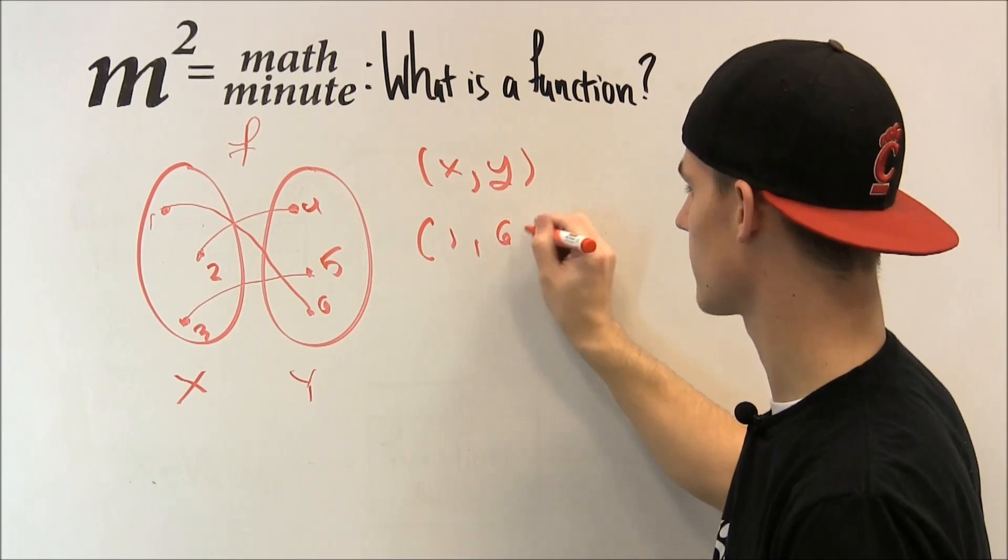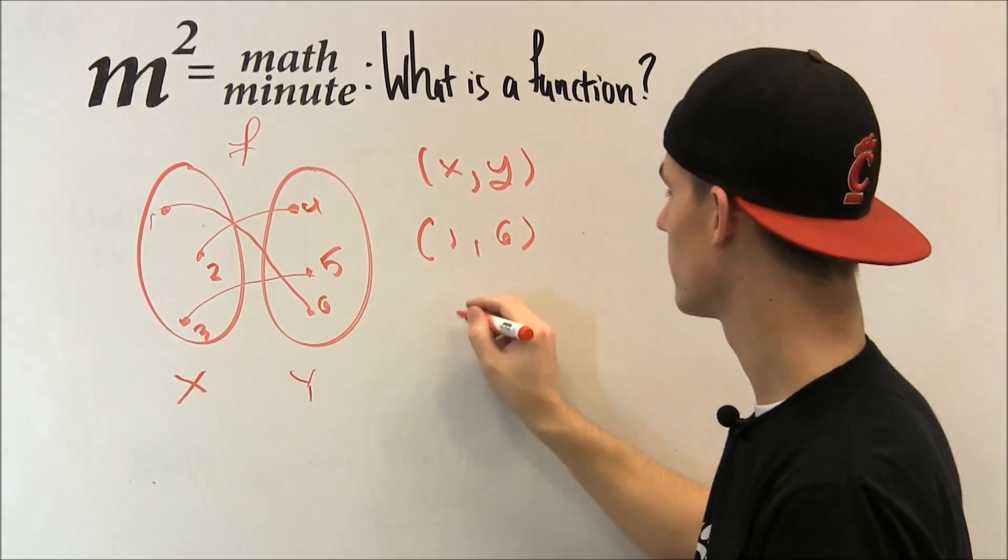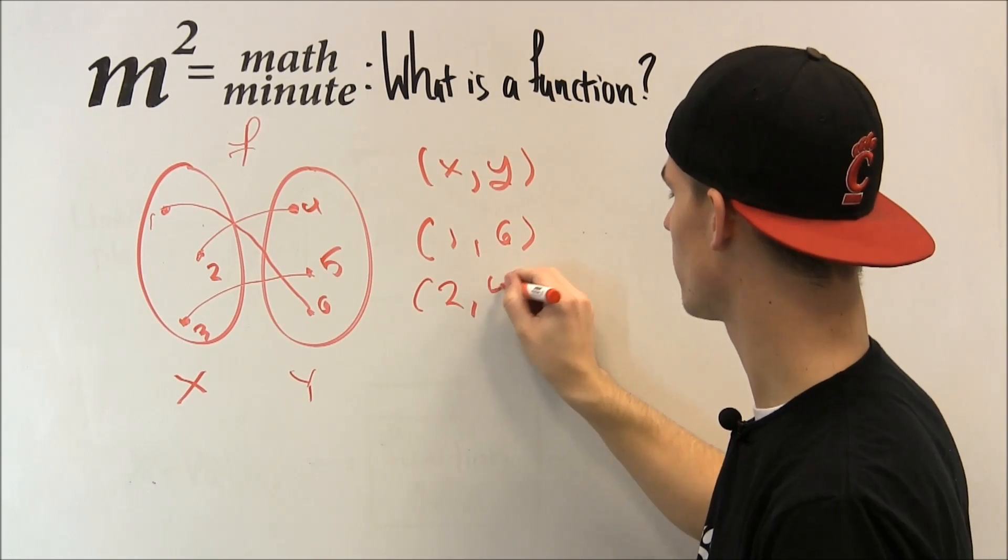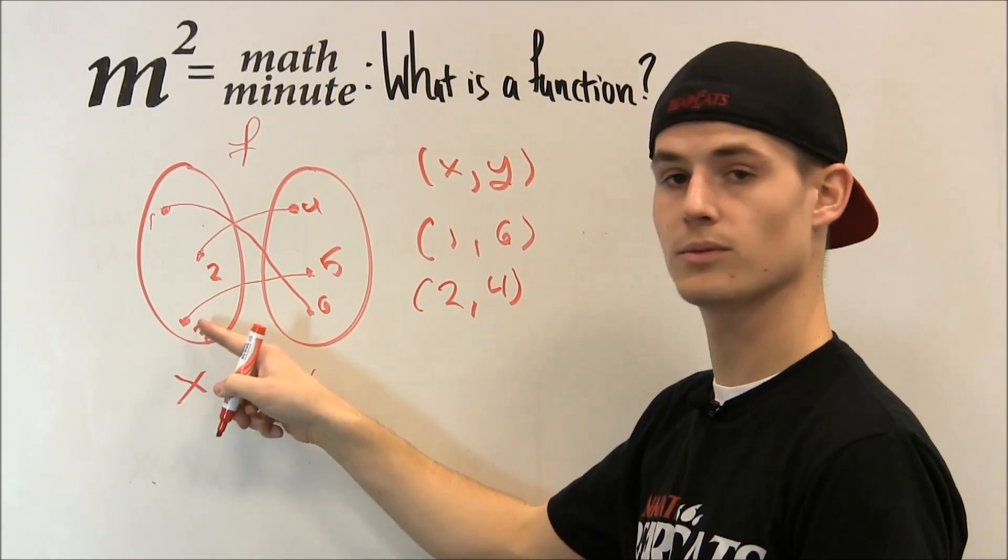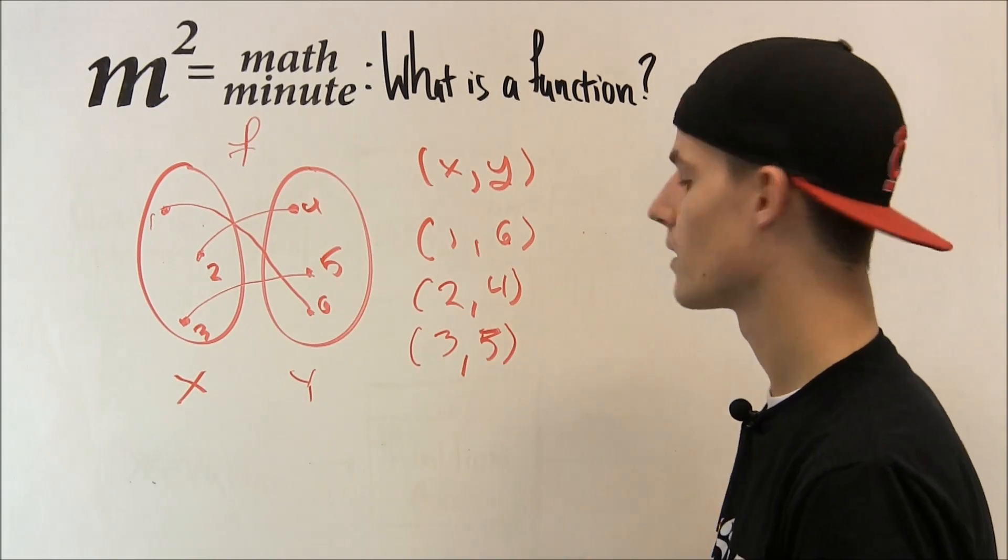So one of the points would be 1, 6. That's an ordered pair. Another one would be 2 and 4. And another one would be 3 and 5.